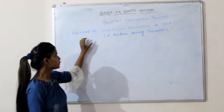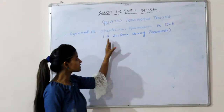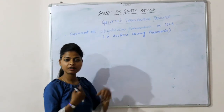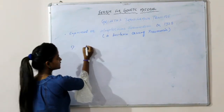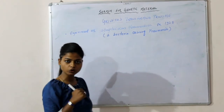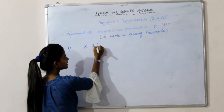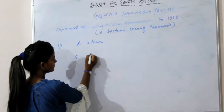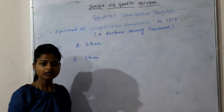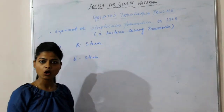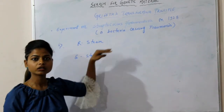Griffith used Streptococcus pneumoniae, a bacteria which causes pneumonia, and he did the experiment on mice. He took two strains for the growth of bacteria: the R-strain and the S-strain. R-strain bacteria do not contain the polysaccharide or mucus in their colonies, so when mice are infected with R-strain, it does not cause pneumonia and the mice do not die.